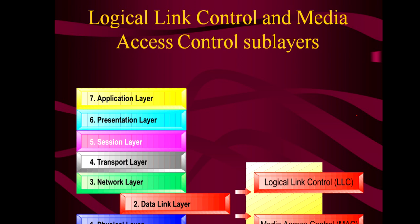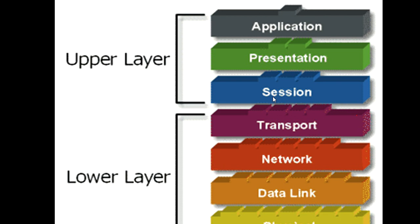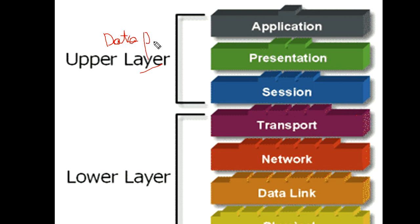Before explaining the function of each layer, note that the data link layer is further divided into logical link control and media access control — you'll come to know that later. The top three layers are called upper layers and the bottom four layers are called lower layers. The responsibility of the upper layers is data presentation, while the responsibility of the lower layers — transport, network, data link, and physical — is data transmission.